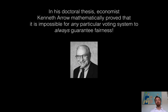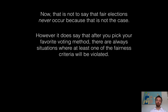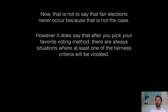Well, it turns out there isn't. The economist Kenneth Arrow mathematically proved in his thesis that it is impossible for any particular voting system to always guarantee fairness. That was just the start of his illustrious career — what a way to start, that is a huge result. That's not to say fair elections never occur, but it does say that for any voting method you choose, you can always find situations where at least one of those fairness criteria will be violated, and therefore the election is not fair.